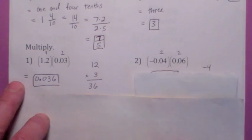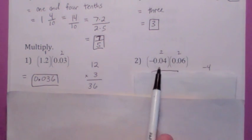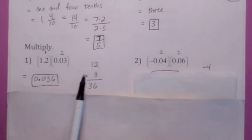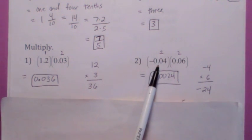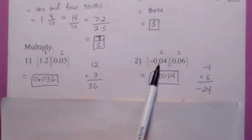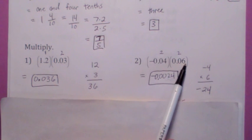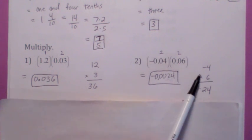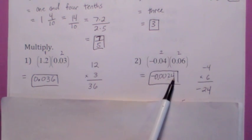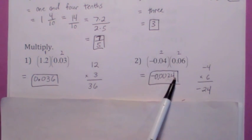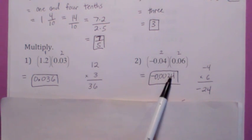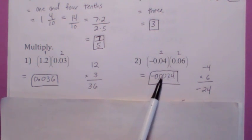Same is true here. Let's pretend this is negative 4 times 6, which is negative 24. You moved the decimal over 2 to the right calling this a 4, and 2 to the right calling this a 6 — that's a total of 4 places. So move the decimal 4 places back to the left. 1, 2, 3, 4 — there's your answer.